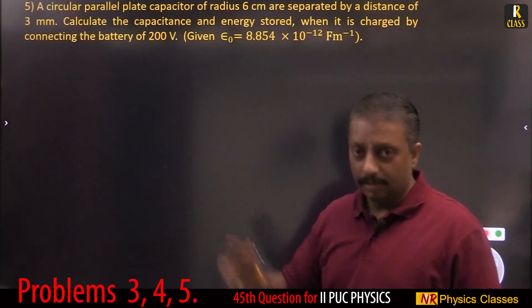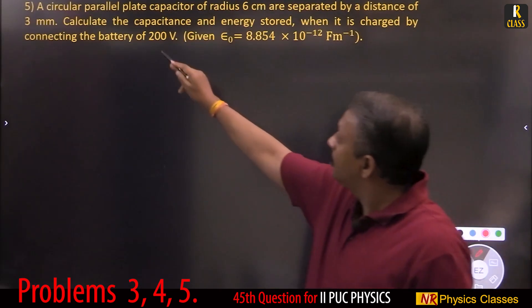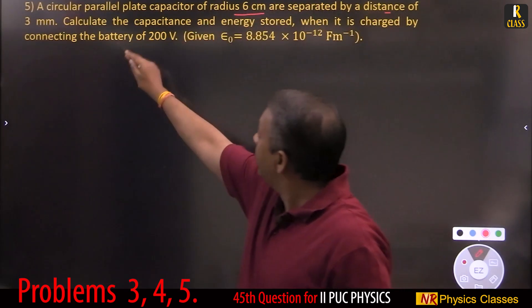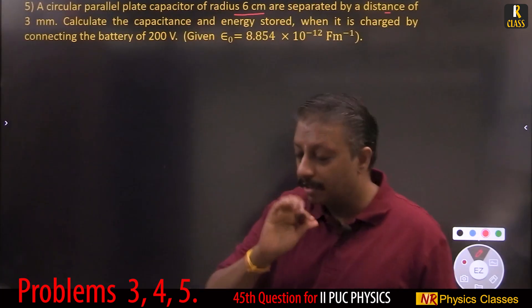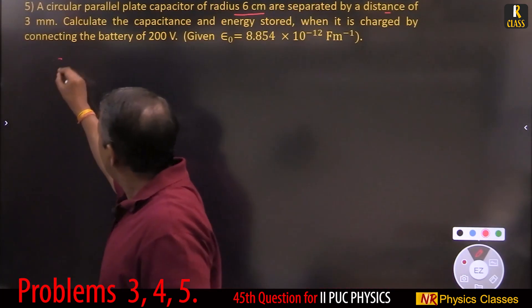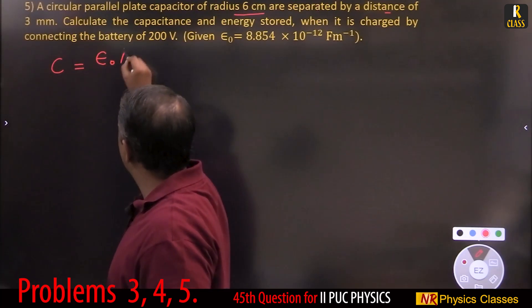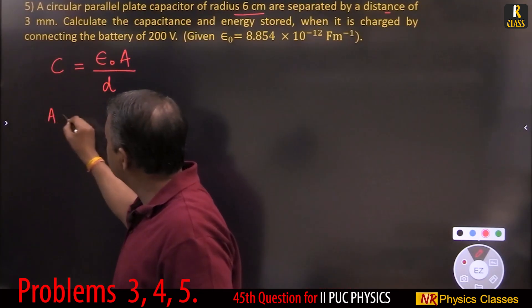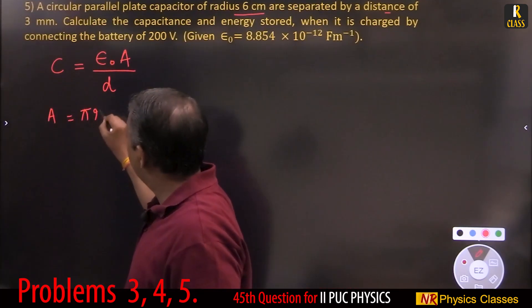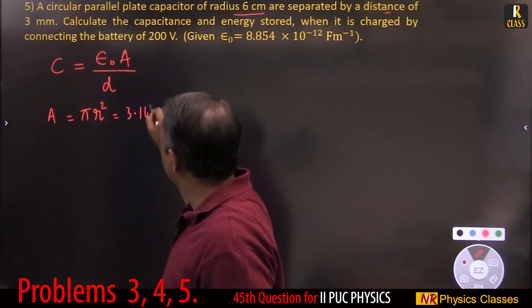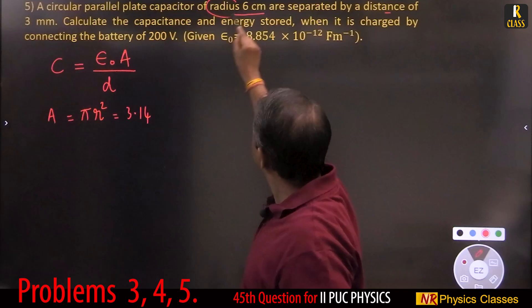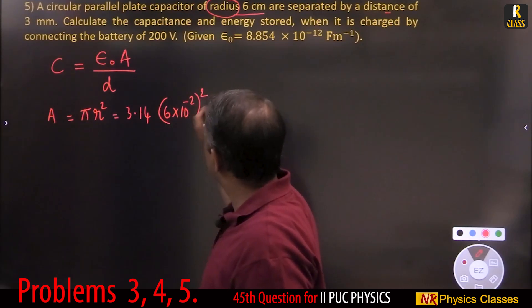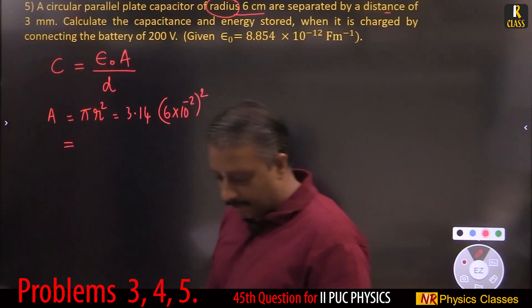This is from the second chapter on capacitors. A circular parallel plate capacitor with a given radius and separation — calculate the capacitance. The formula for capacitance of a parallel plate capacitor is C equals epsilon naught times A divided by d. Area A of the circular plate is pi r squared.